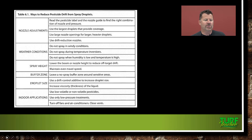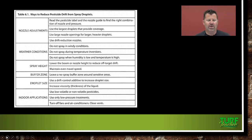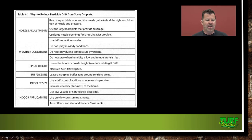Table 6.1 in your book discusses ways to reduce pesticide drift from spray droplets. For nozzle adjustments: read the pesticide label and nozzle guide to find the right combination of nozzle and pressure. Use the largest droplets to provide coverage — use large nozzle openings for larger, heavier drops because heavier drops are less likely to be carried away. Use drift reduction nozzles. For weather conditions: do not spray in windy conditions, do not spray during temperature inversions, and do not spray when humidity is low and the temperature is high. For spray height: lower the boom or nozzle height to reduce off-target drift and maintain even travel speed. Leave a no-spray buffer zone around sensitive areas. Use a drift control additive to increase droplet size and increase viscosity. For indoor applications, use low-volatile or non-volatile pesticides, use only low pressure treatments, and turn off fans, air conditioners, and close vents.